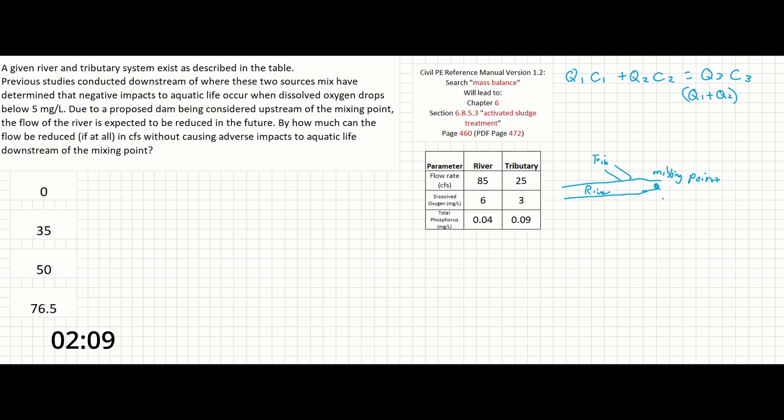Step 1 is going to be to find the current concentration in the river and tributary downstream of the mixing point.